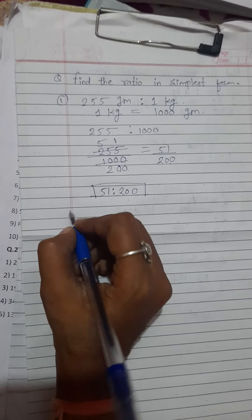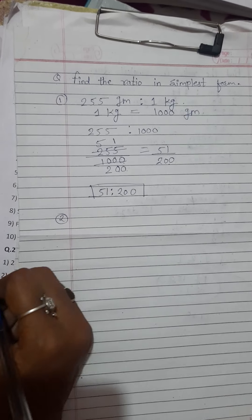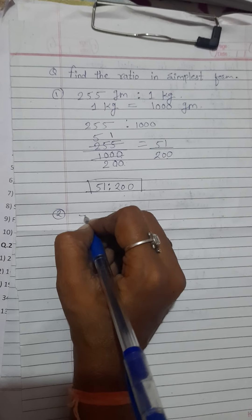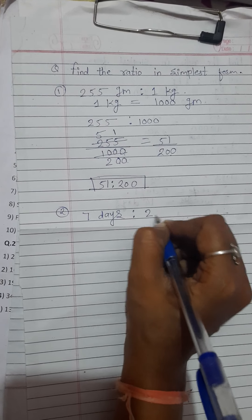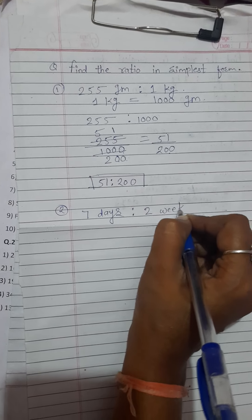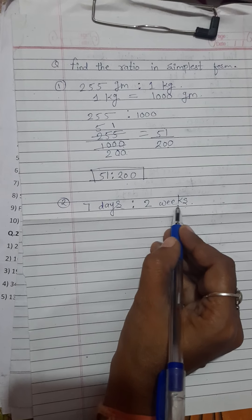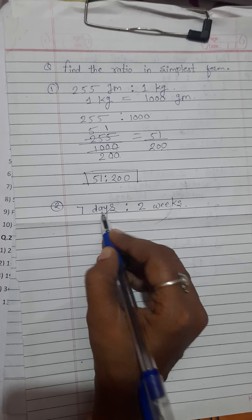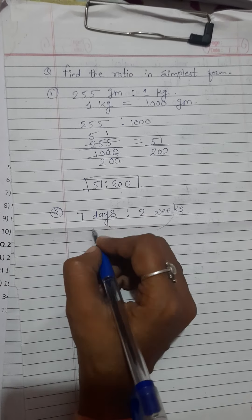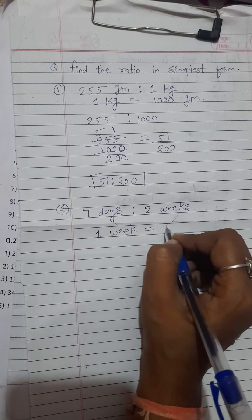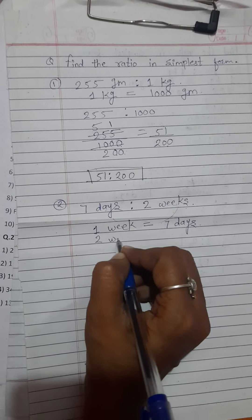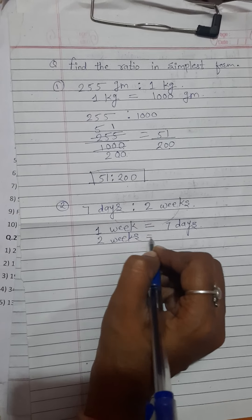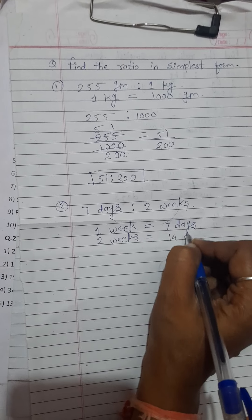Again we solve second one example. 7 days ratio 2 weeks. Now we just convert that weeks in days. Tell me, 1 week means how many days? 7 days. Very good. And 2 week means? 2 weeks means 14 days. It's simple.